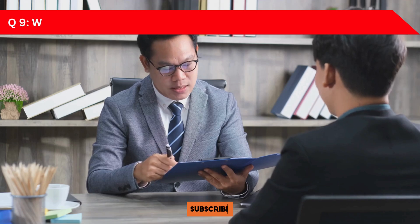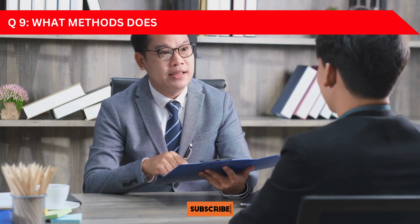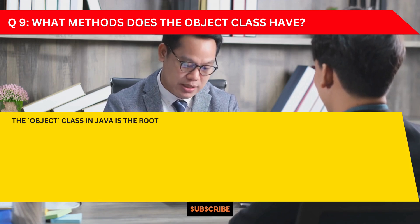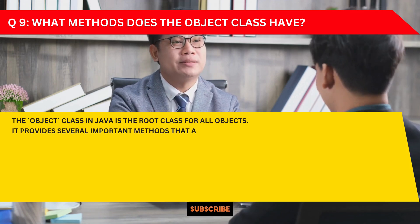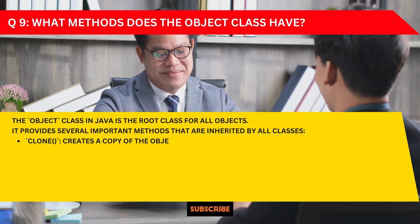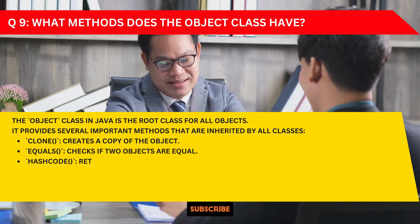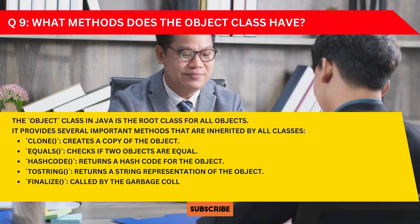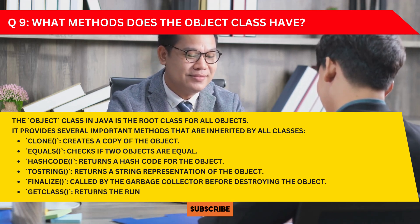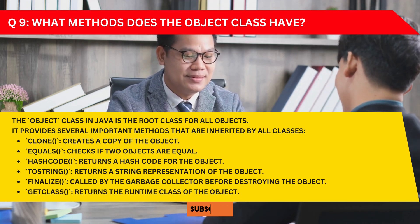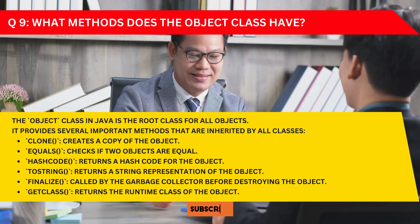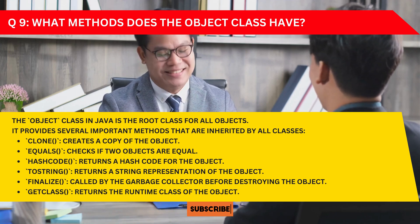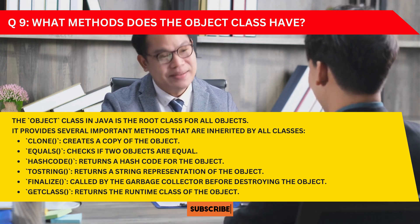Question nine: What methods does the Object class have? The Object class in Java is the root class for all objects. It provides several important methods inherited by all classes, such as clone() which creates a copy of the object, equals() which checks if two objects are equal, hashCode(), toString(), finalize(), and getClass(). You can go through these later for reference.